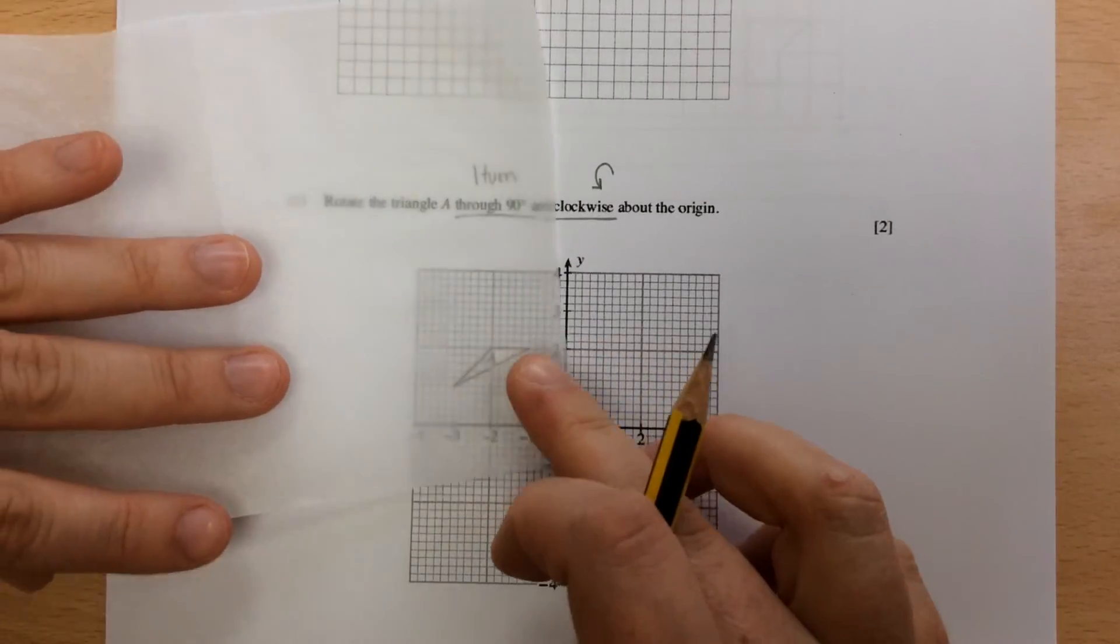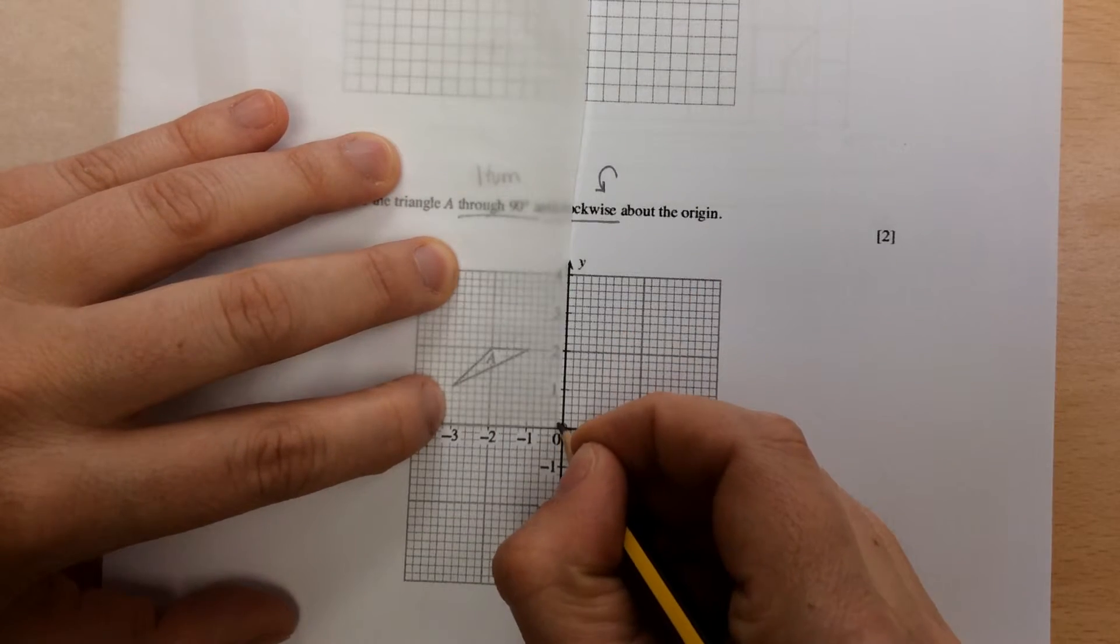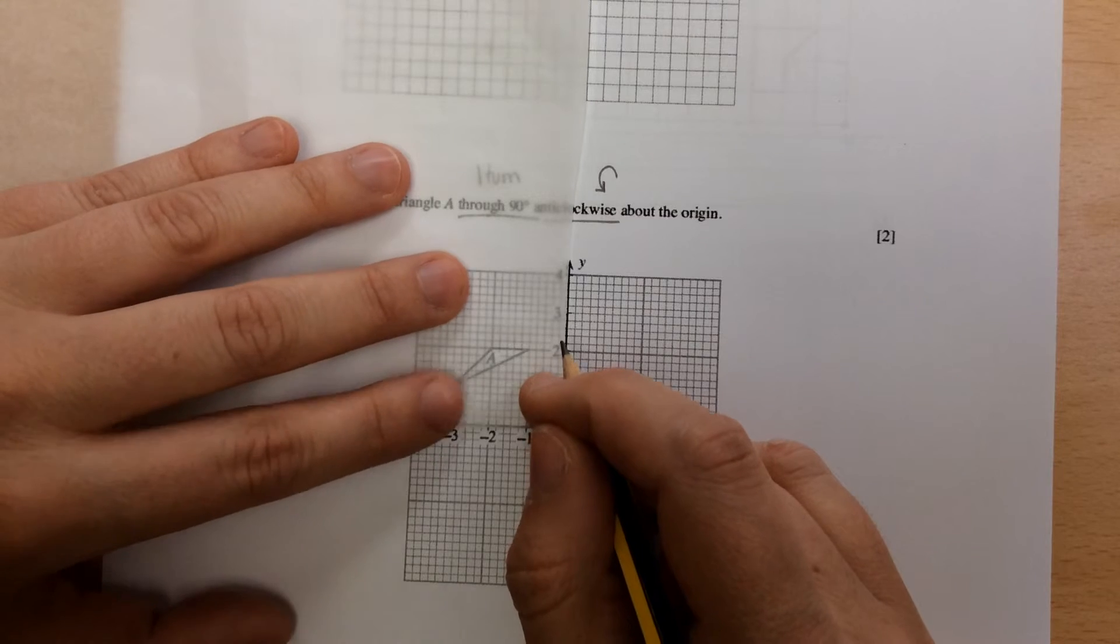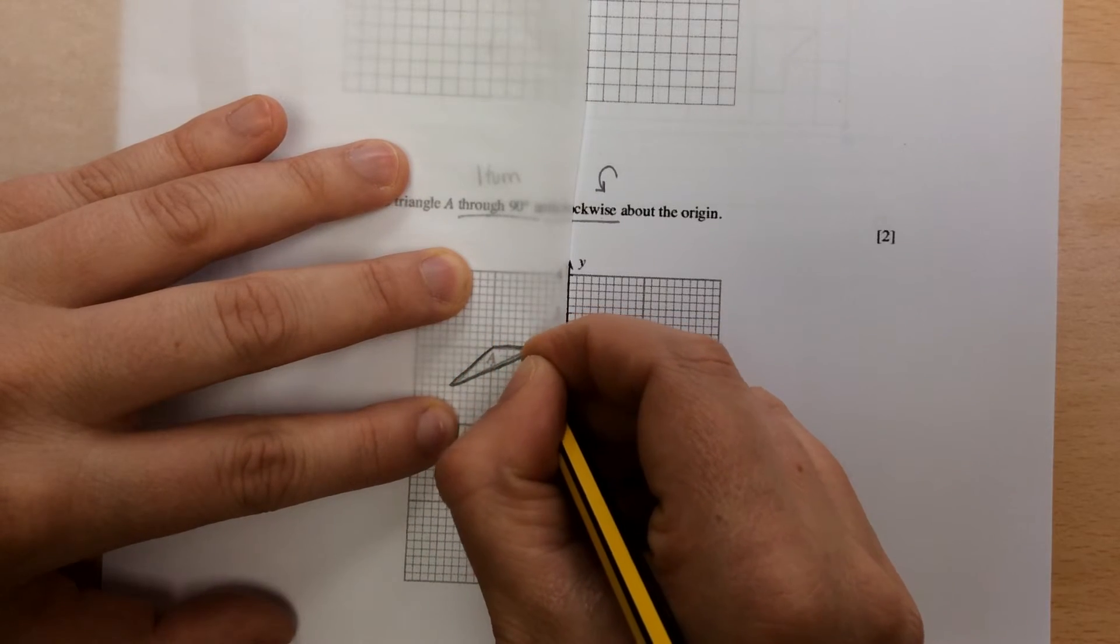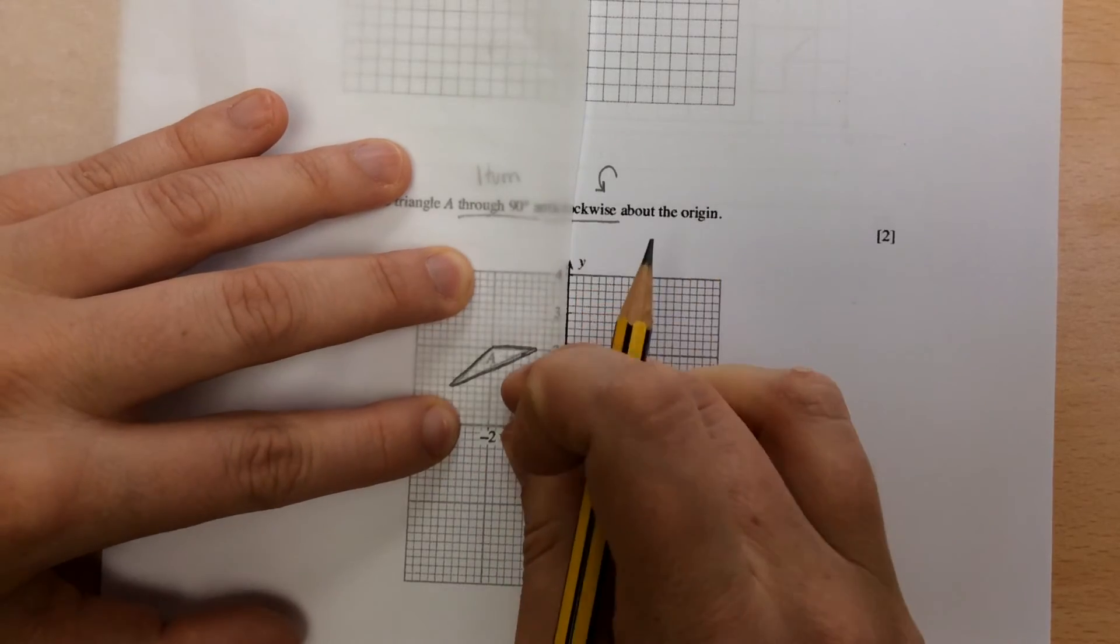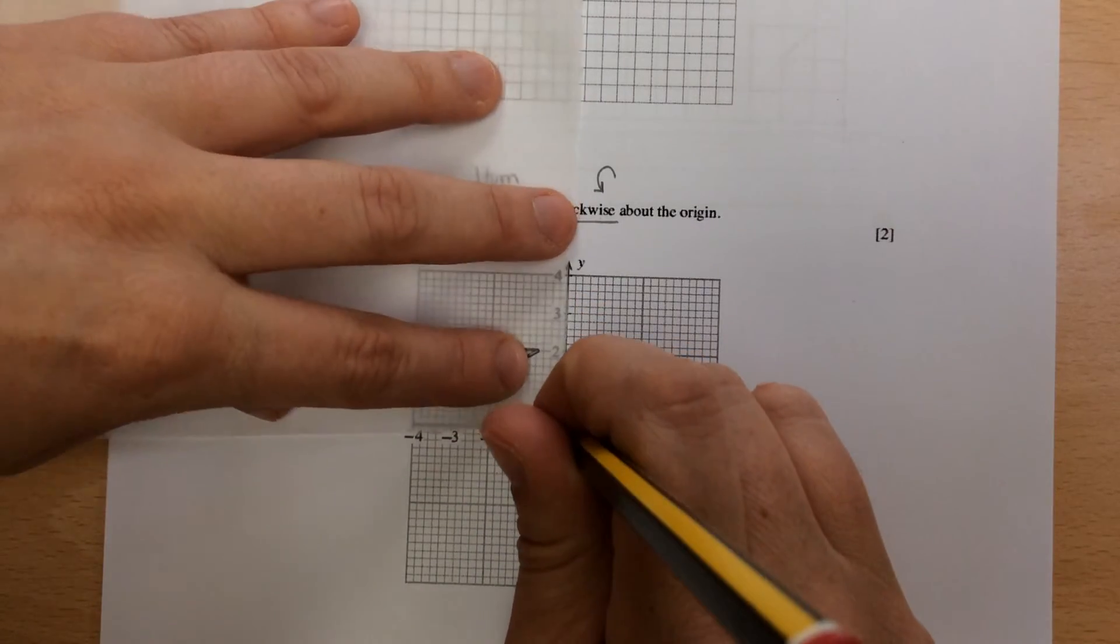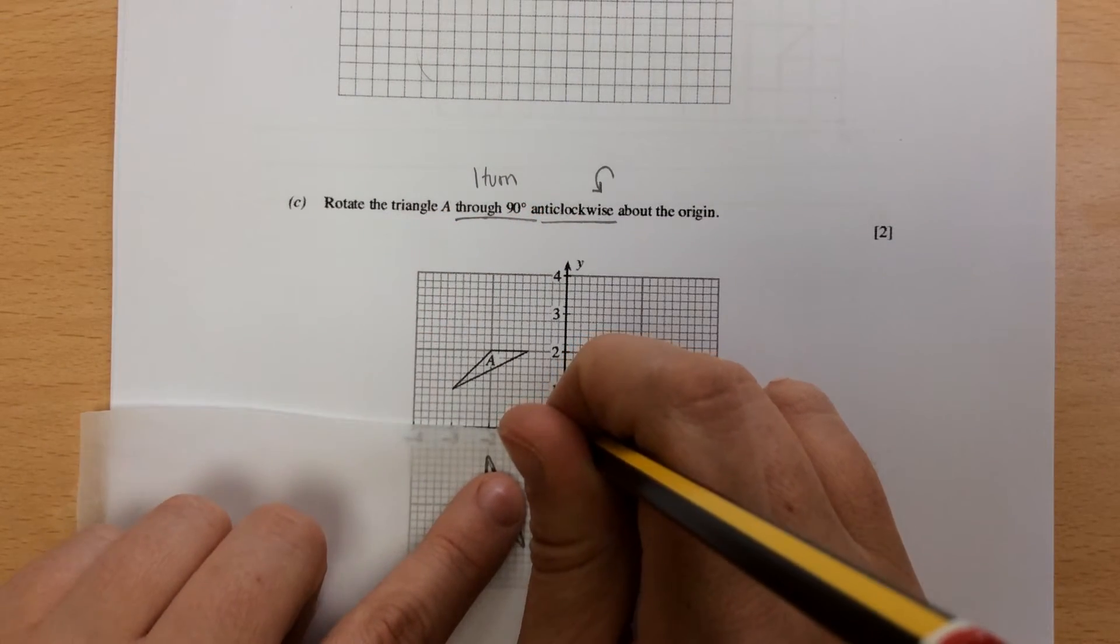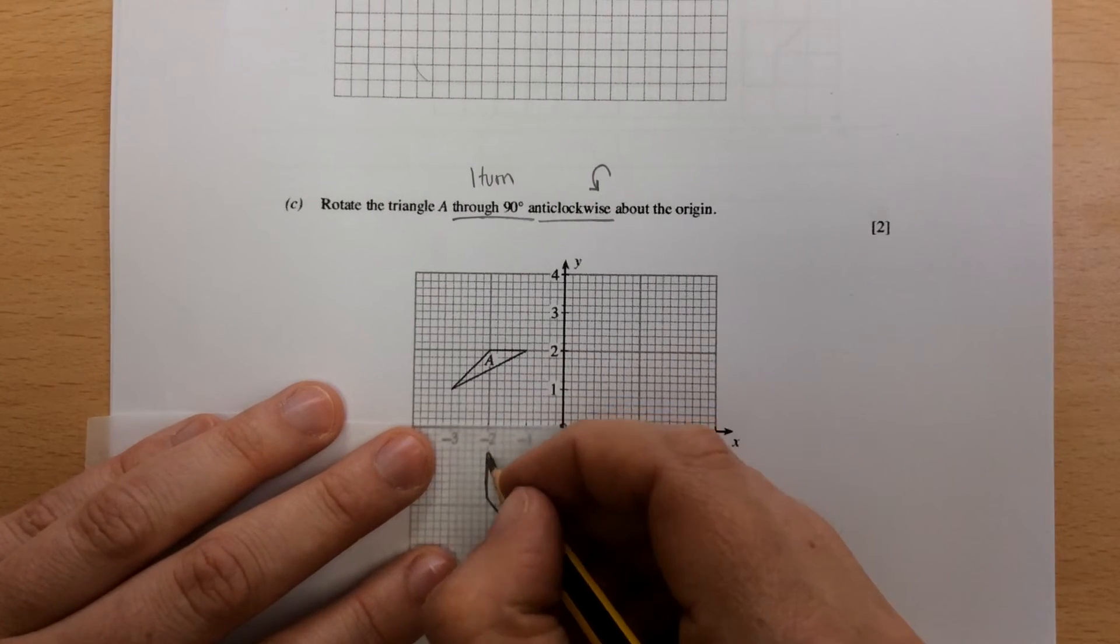So you put your tracing paper on. Line it up. And we're going to turn it once. And we're going to draw the shape. We're turning it once anticlockwise. So I'm putting my pencil in the origin and turning it once anticlockwise. So my shape is there.